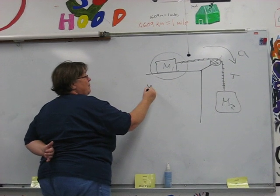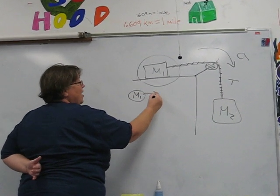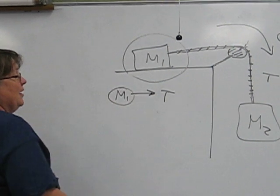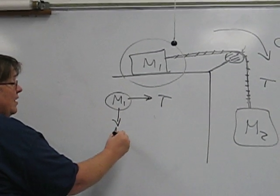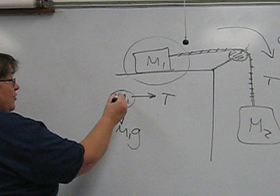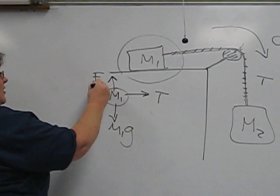If you look at the mass one, all you have going on is tension pulling it. You do have the weight of the mass, which is supported by the table.